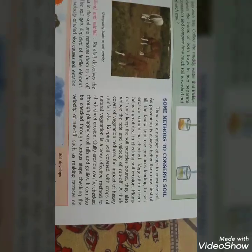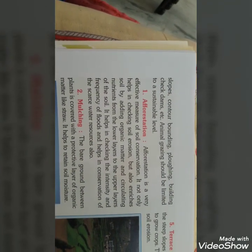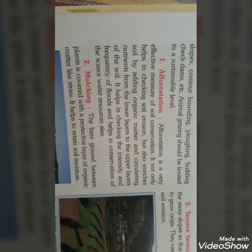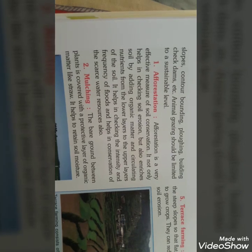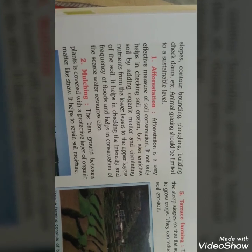और भी बहुत सारे steps हैं जिनकी वजह से soil erosion कम होगा — जैसे making slopes, contour bounding, checking dams, animal grazing should be limited to a sustainable level. Next is afforestation — सबसे important method है कि हम जादा से ज़्यादा पेड़ उगाएं, जिनकी वजह से soil erosion control कर पाएंगे।